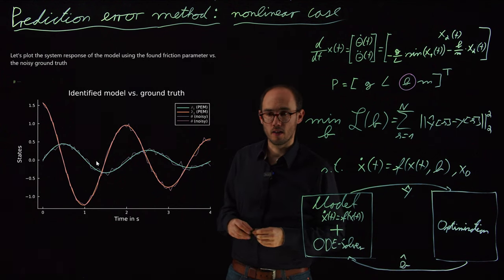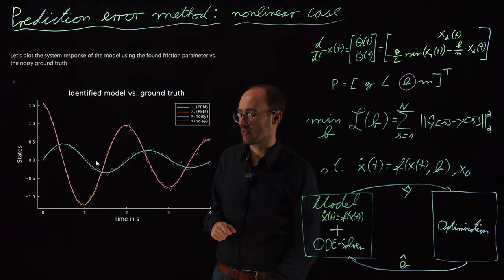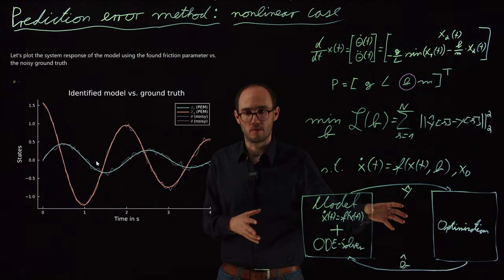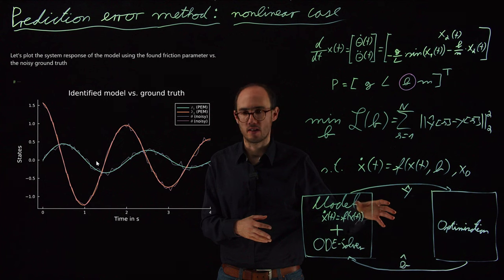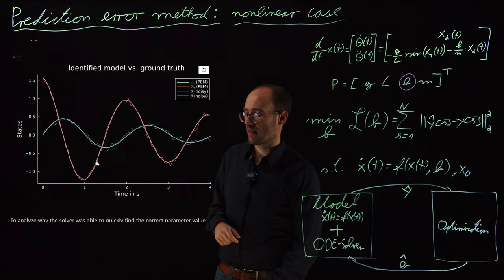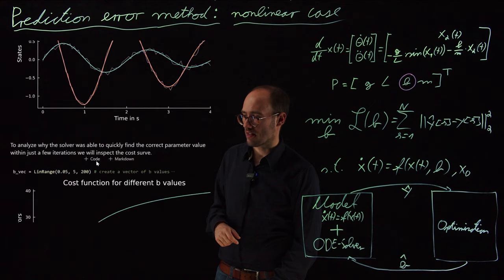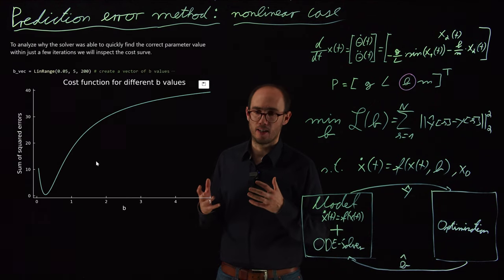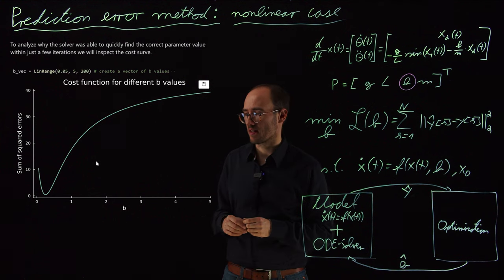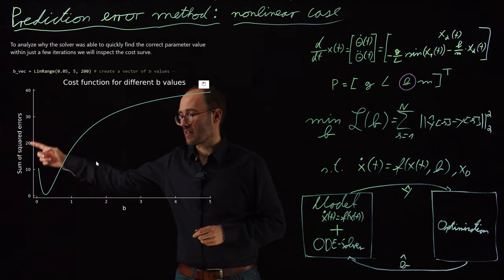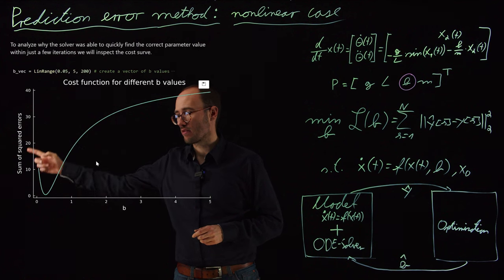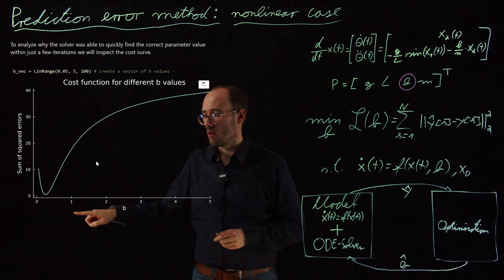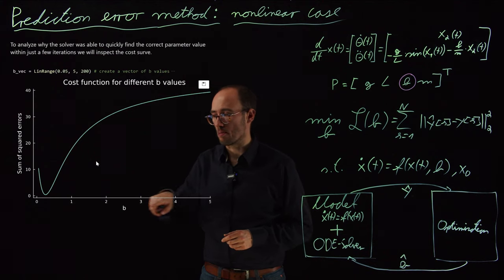One final highlight I would like to make here in this notebook is that the solution of this optimization loop that came very quickly to us. So the solver just needed, I think it was three iterations. And that is because the optimization problem was quite well behaving to us in that sense. If we plot the optimization costs, so the identification costs of the residuals between model and measurements, over different values of the friction coefficient B.